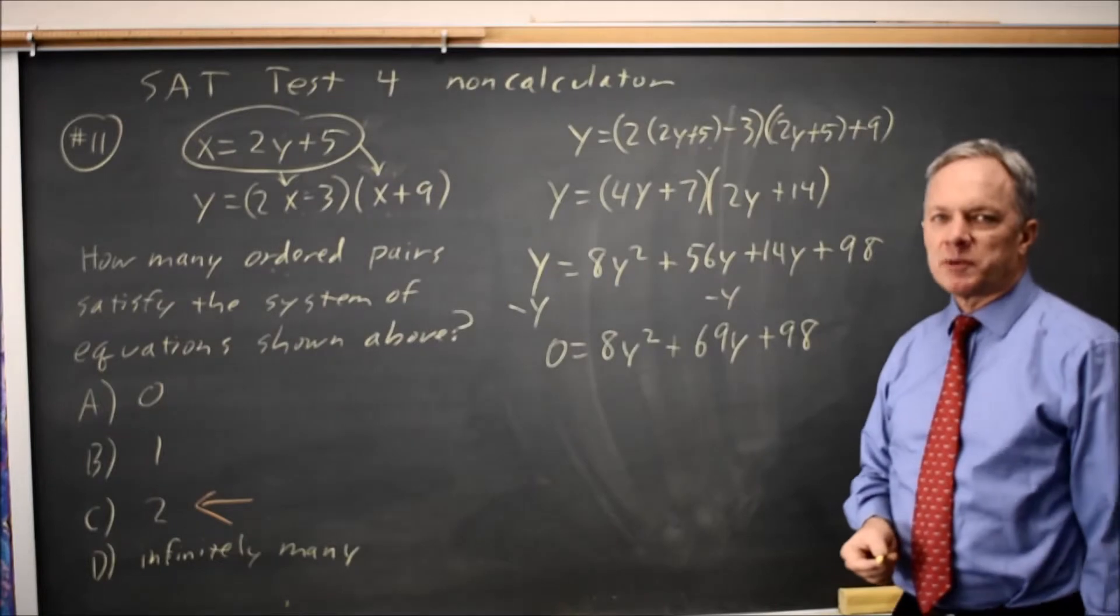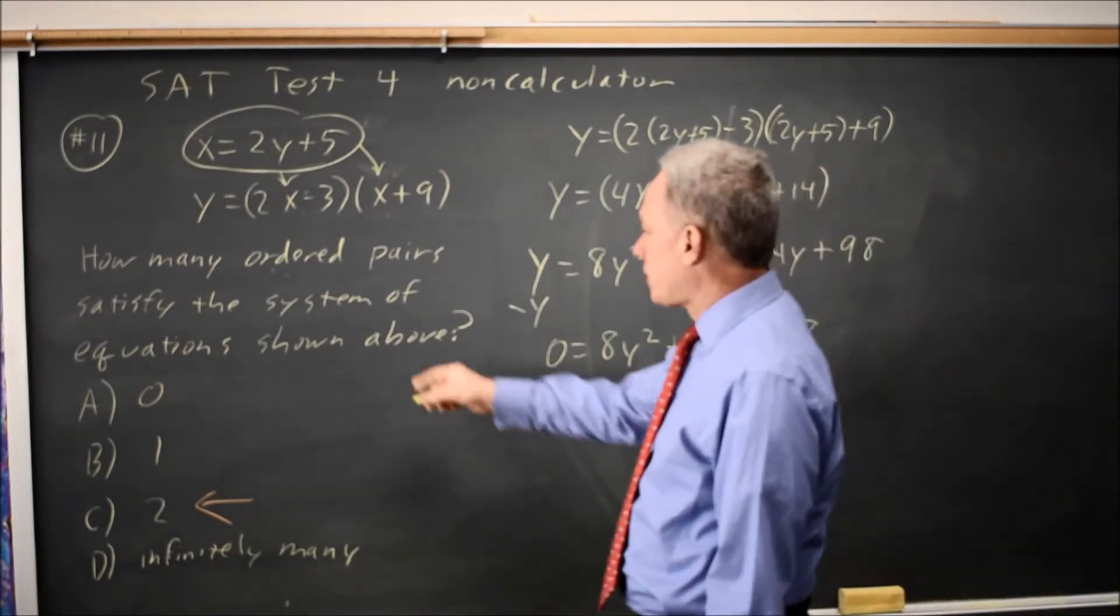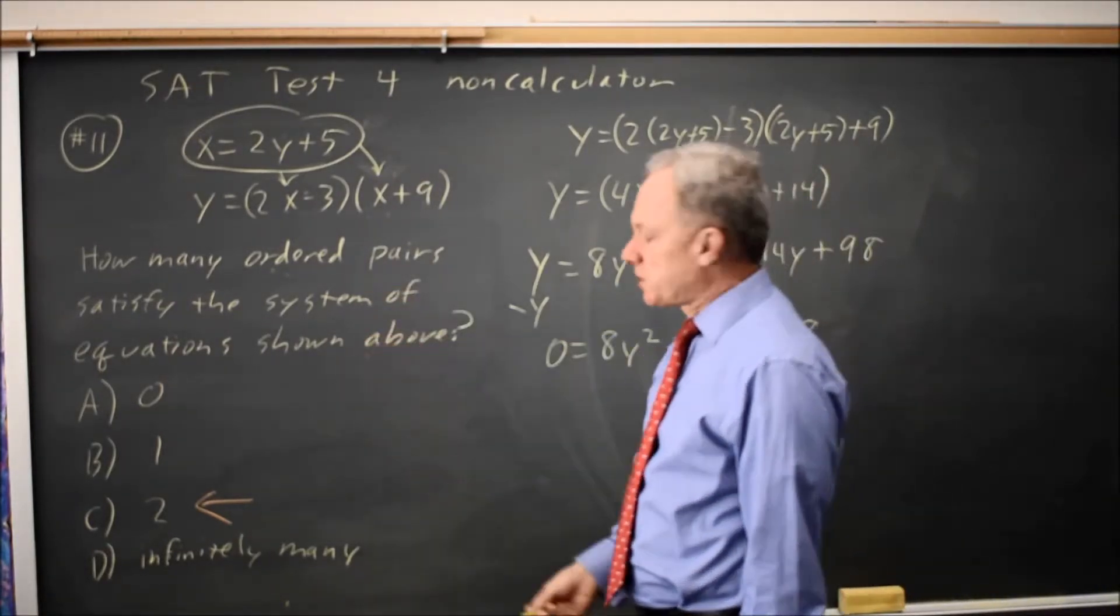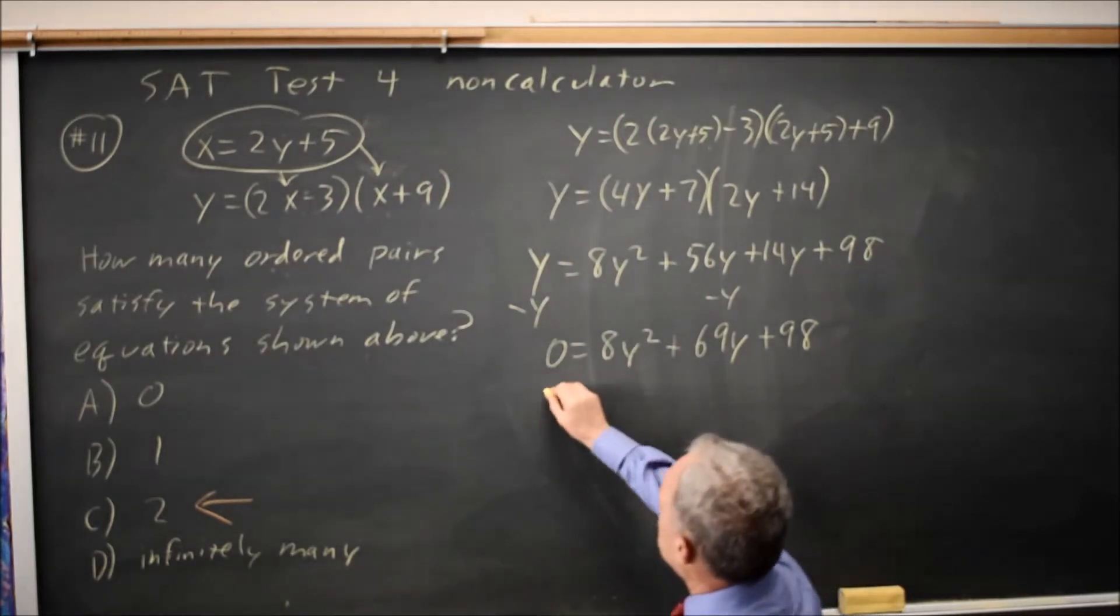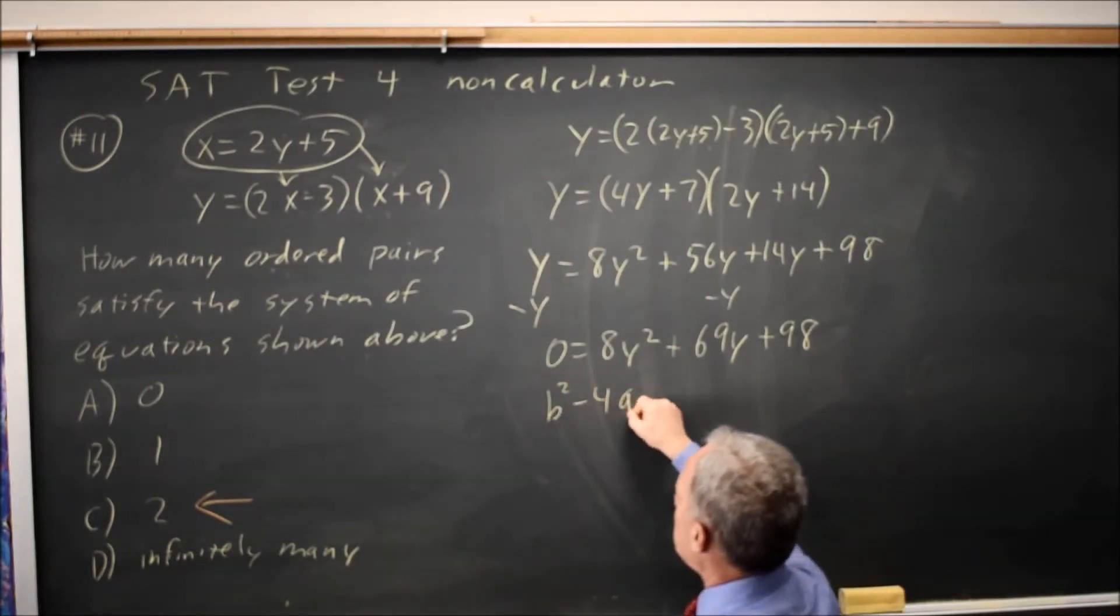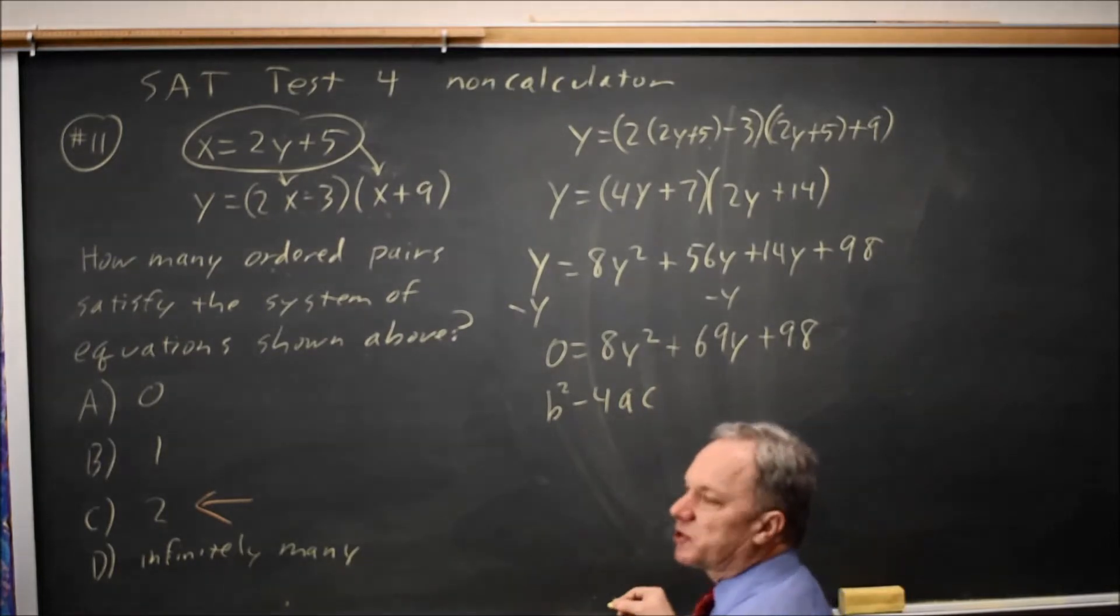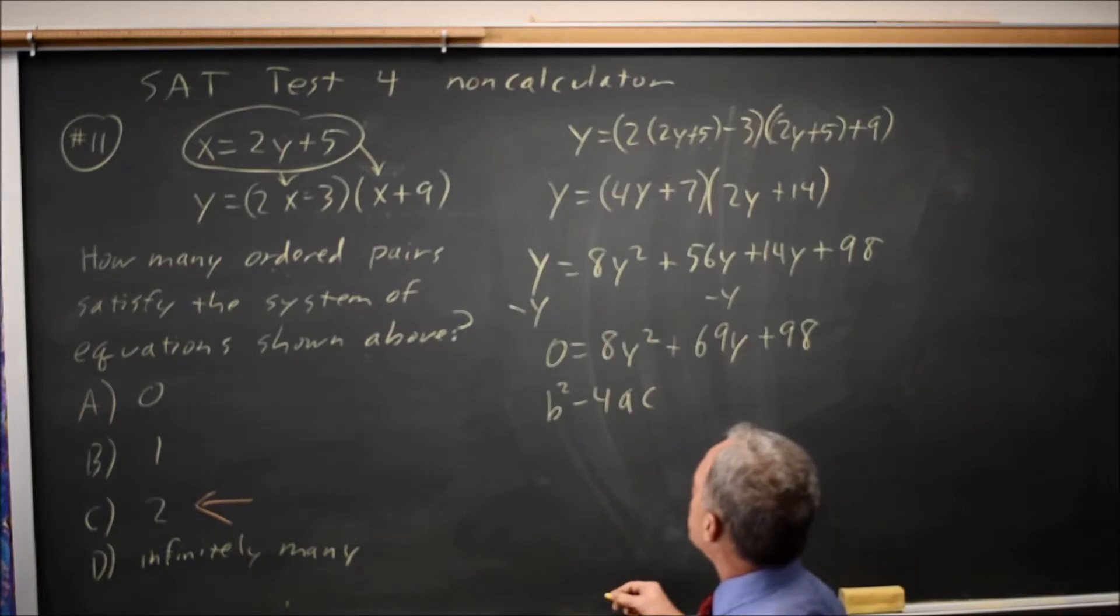I could use the quadratic formula to find the exact answers, but they're not asking for the solutions. They're asking just how many. So I'm going to use the discriminant. b squared minus 4ac is the discriminant. If this is greater than 0, there will be two solutions, verifying what I found graphically.